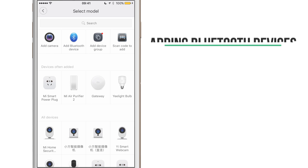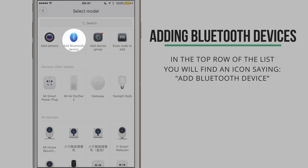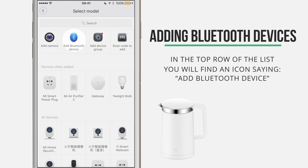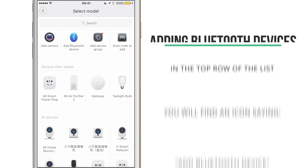If you have one of Xiaomi's Bluetooth devices, at the very top you can find an icon saying 'Add Bluetooth Device', and there you can find the smart kettle, the toothbrush, the flower care, and all the other products that Xiaomi has equipped with Bluetooth.